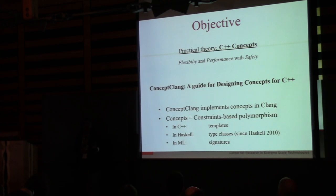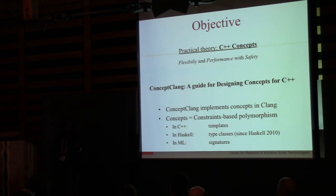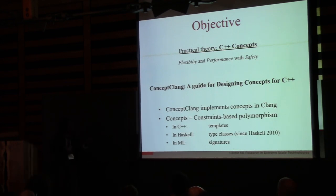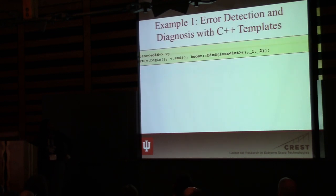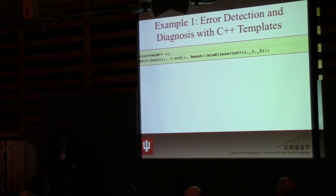Concept Clang is supposed to guide the design of concepts for C++. We're trying to do this from an implementation perspective by extending Clang with concepts. Concepts themselves are not really a new notion — if you've worked with type classes in Haskell or signatures in ML, you've seen them in some capacity. It's not exactly the same as concepts in C++, but you can build an intuition based on those. In C++, they drive the design of template libraries.